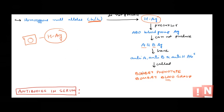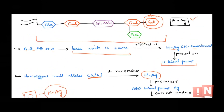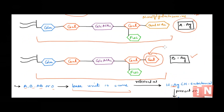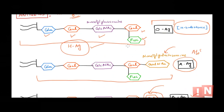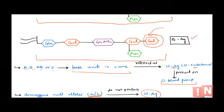For more detail on Bombay phenotype, there is a link on screen. In summary, Bombay phenotype individuals don't have H antigen, so even if they have a gene for A or B antigen, they cannot transfer the sugar and will not produce those antigens. As a result, they carry antibodies against A, B, and H - all three.